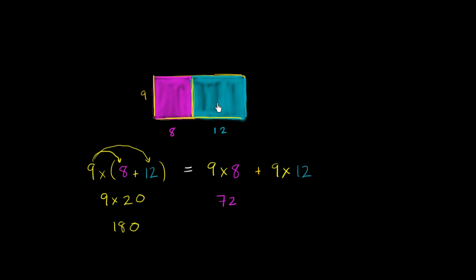Area of the blue rectangle: 9 times 12. Well, that's 108. And we're going to take the sum of the two to find the area of the larger rectangle. What is 72 plus 108? Well, 72 plus 108 is also equal to 180.